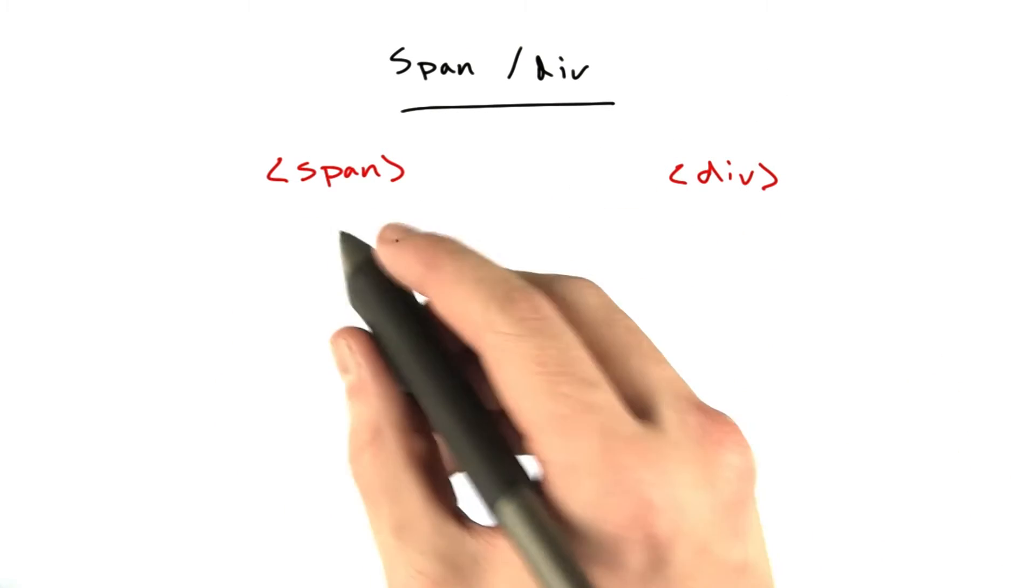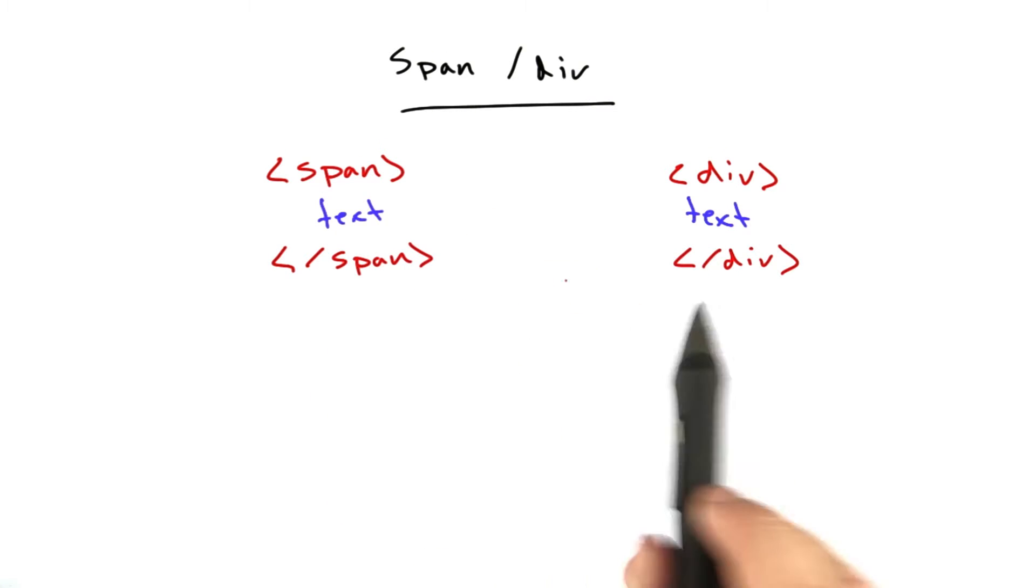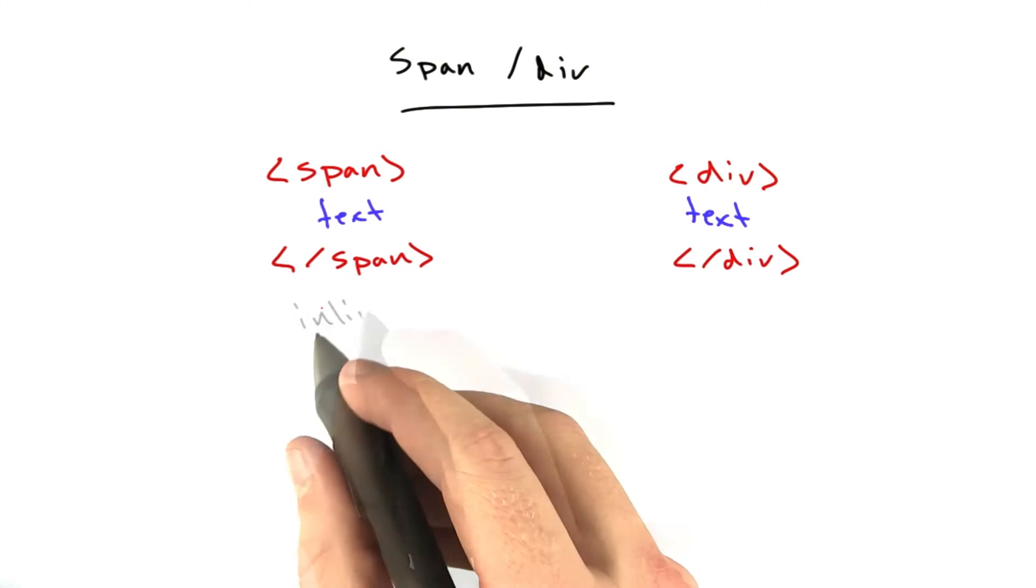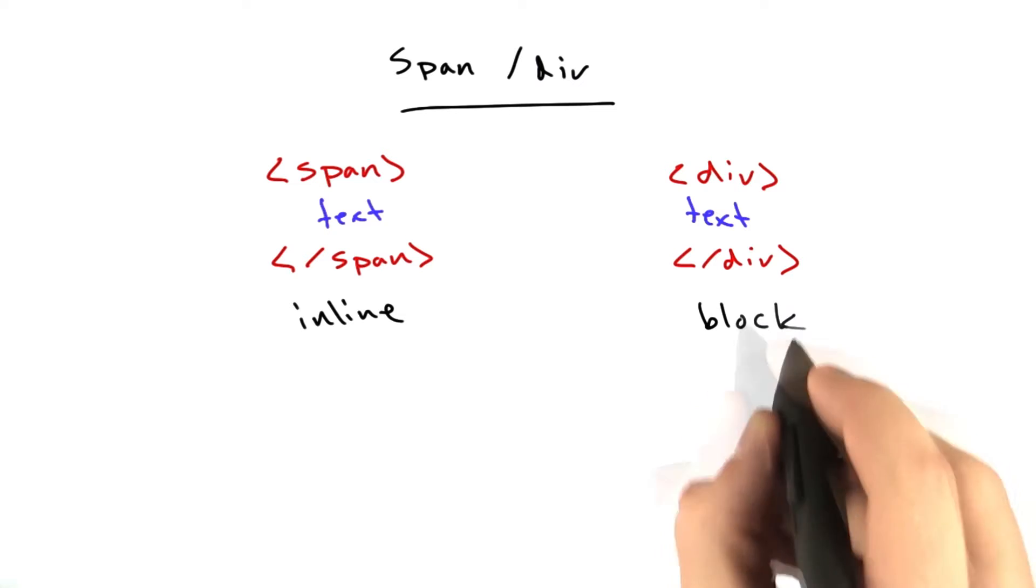Span and div are both normal elements. They can both have content. And the only difference between these two is span is inline, and div is block.